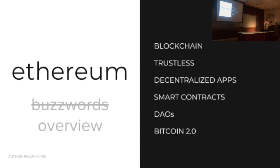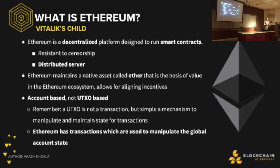You've probably heard all these words for Ethereum: blockchain, trustless, decentralized applications, smart contracts, DAOs, Bitcoin 2.0. These are all kind of true. But Ethereum is more than that — it encompasses all these things into one. The formal definition is it's a decentralized platform designed to run smart contracts. It's resistant to censorship, and it's basically like a distributed server. You can think of it kind of like Git, except people are running computations in the background to serve up other people's transactions on this decentralized computer.